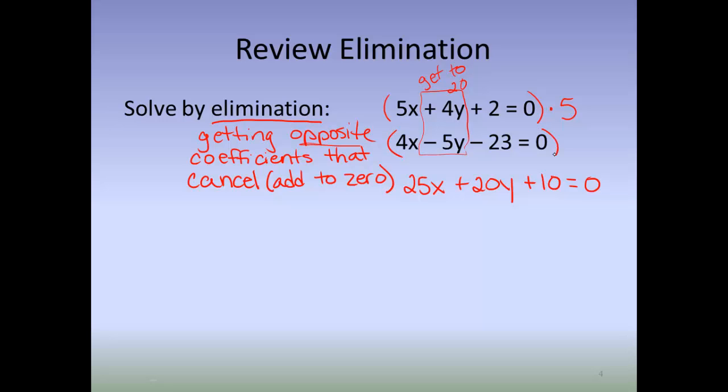Same thing for the bottom. I'm going to multiply this by 4 to get that 5 to be 20. So I distribute and I get 16x minus 20y minus 92 equals 0. Now I can go ahead and add these two equations together. When that happens, the y's add up to be 0, and I get 41x minus 82 equals 0.